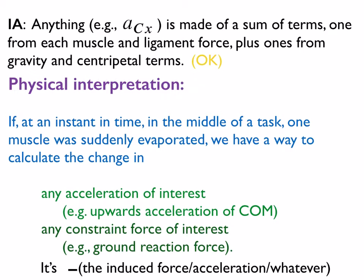What's the physical interpretation? Imagine a person is doing something, and in the middle of doing it—in some configuration, at some time—you suddenly zap one of their muscles and make the force in that muscle zero. The question is, how does some acceleration of interest, say the acceleration of the center of mass, or a constraint force of interest like the force of the ground on the foot, change? And it's just this induced acceleration term, or induced force term.